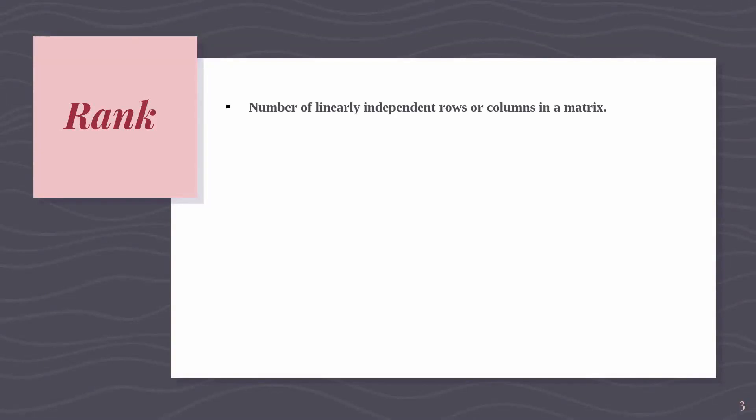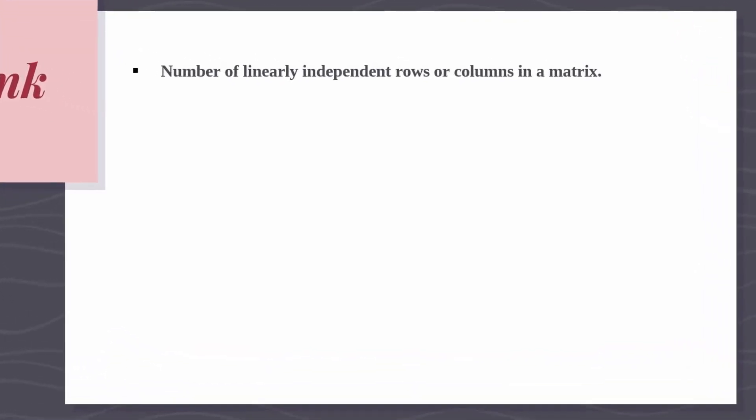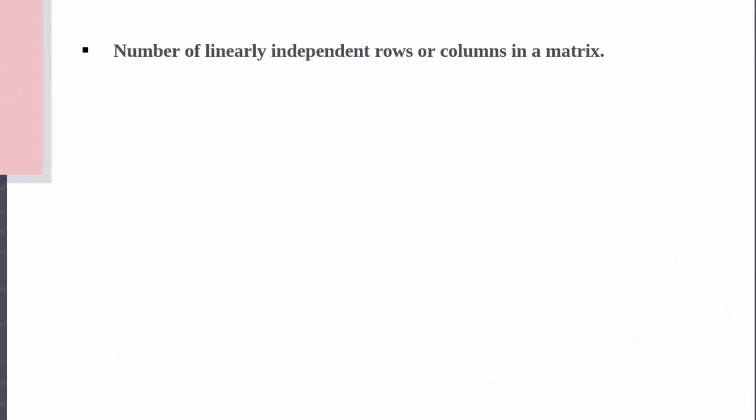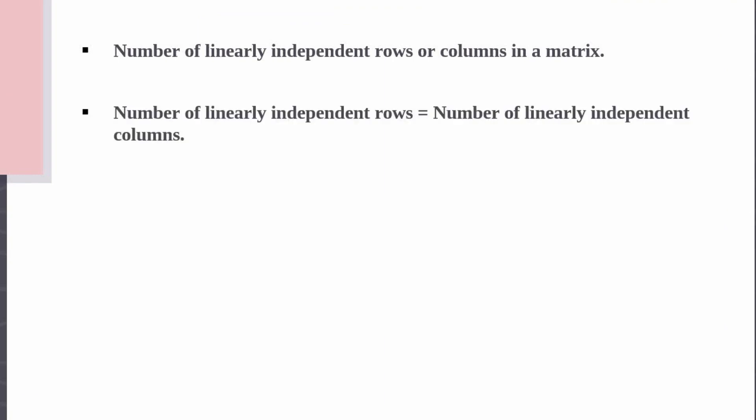Rank of a Matrix is nothing but the number of linearly independent rows or columns in a matrix. In a matrix, the number of linearly independent rows is always equal to the number of linearly independent columns. So we can consider either as the Rank of the Matrix.